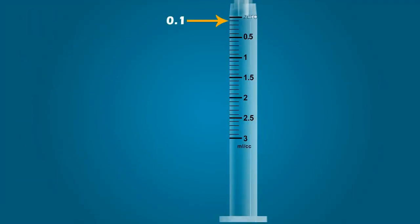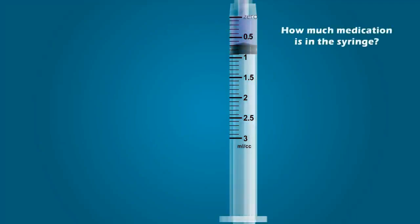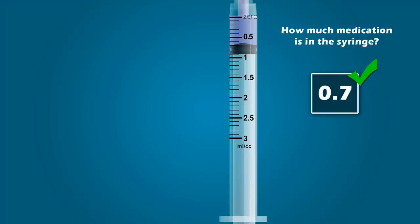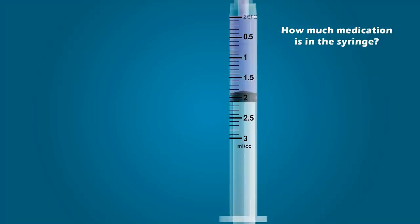This line is 0.1, this is 0.2, 0.3, and so on. Now that we know the value of all the graduation marks, let's determine the amount of medication in the syringe. How much medication is in this syringe? If you stated 0.7 ml, you are correct. Try one more — how much medication is in this syringe? If you stated 1.9 ml, you are correct. Great job.